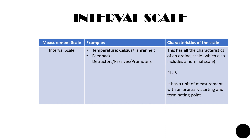An interval scale has all the characteristics of an ordinal scale — that is, individuals or responses belonging to a subcategory have a common characteristic and the subcategories are arranged in ascending or descending order. In addition, an interval scale uses a unit of measurement that enables individuals or responses to be placed at equally spaced intervals in relation to the spread of the variable. The scale has a starting and a terminating point and is divided into equally spaced units and intervals.